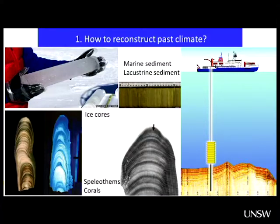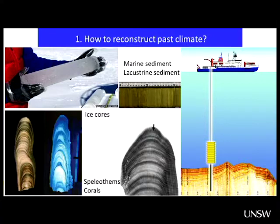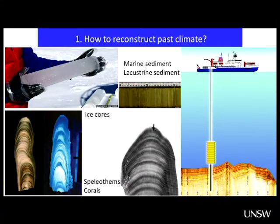The last archives I want to briefly show you are speleothems and corals. It's interesting how similar they are — speleothems here, and a coral head here — both made of calcium carbonate but from very different environments. Scanning images show different colors from different environments. In corals, you can see different colors depending on the season, so corals and speleothems are fantastic archives because they are very high-resolution. In corals you can see a seasonal cycle; in speleothems, maybe annual changes.